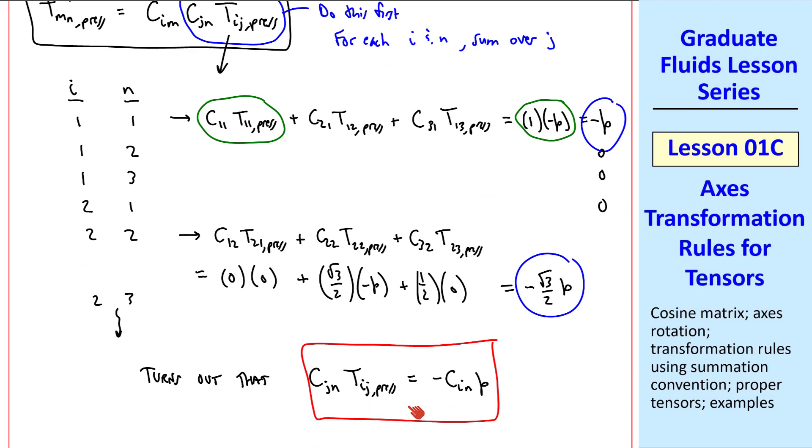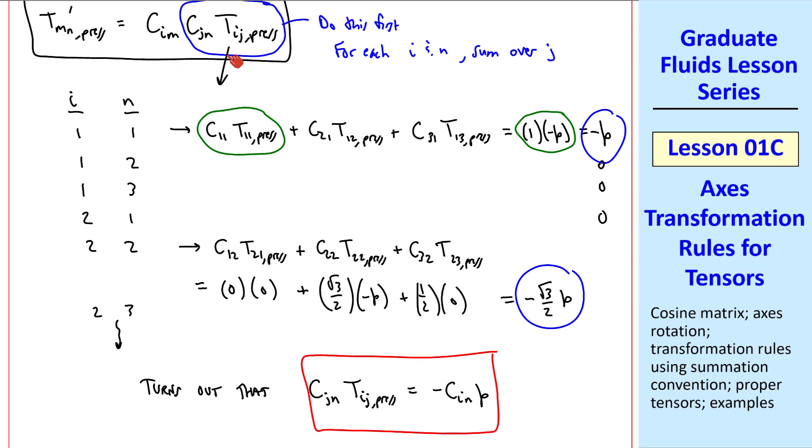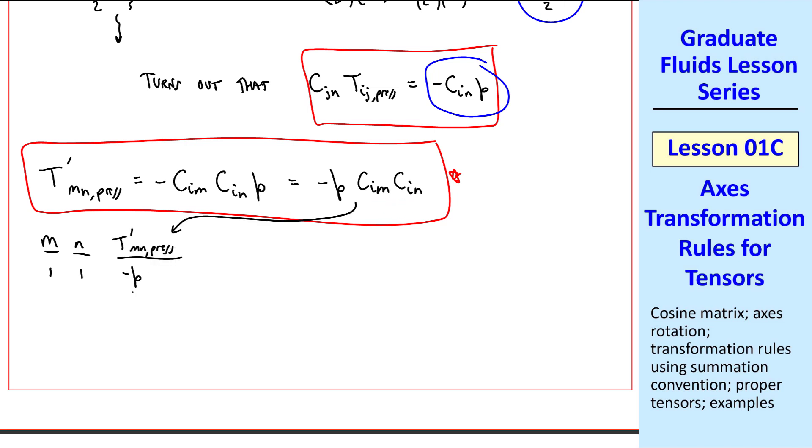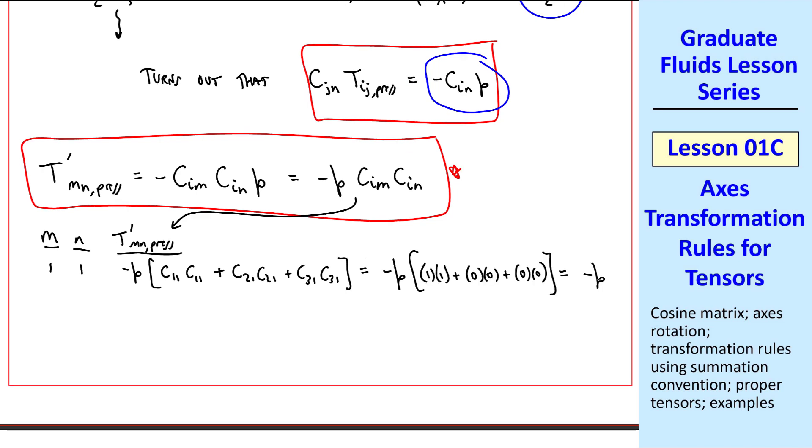So this greatly simplifies our analysis, because now we can use this equation and substitute what's circled in blue here with what's circled in blue here. I'll rewrite the equation for t'_mn pressure as negative c_In times p. And since p is just a scalar, we can write negative p c_Im c_In. Again, we can make ourselves a table to do these calculations. Here we see that m and n are free variables, and we must sum over i. When m and n are both 1, we get negative p, and now summing over i's, c11 c11 plus c21 c21 plus c31 c31. And plugging in our components for the cosine matrix, we get negative p.